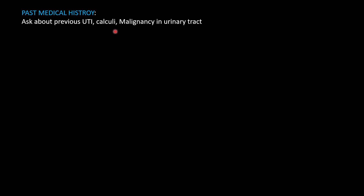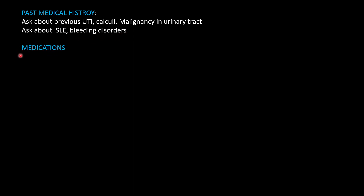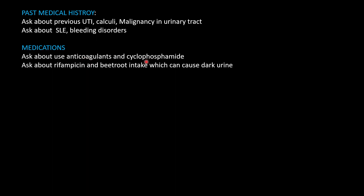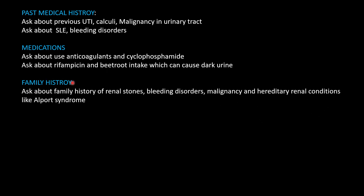In past medical history, ask about previous episodes of UTI, renal calculi, and malignancy of the urinary tract. Ask about connective tissue diseases like SLE and systemic sclerosis, as well as bleeding disorders. Regarding medications, specifically ask about anticoagulants, cyclophosphamide, and rifampicin, which can darken the urine. Also ask about beetroot consumption, which also causes dark urine.